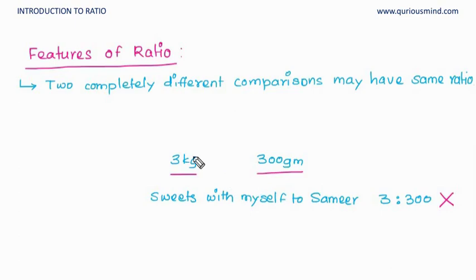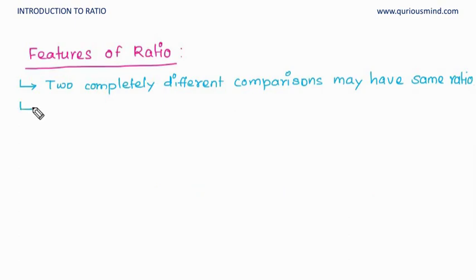Then how can the ratio be 3 is to 300? It cannot be. So what is wrong here? The mistake we have done here is these two quantities are in different main units, so here it is kilogram and here it is gram. For a ratio we cannot compare two quantities in different measurement units; they have to be in the same measurement unit. So to compare two quantities using ratio, they must be in the same unit of measurement.